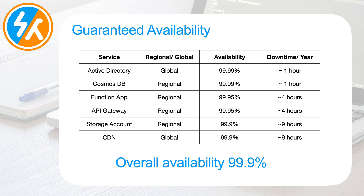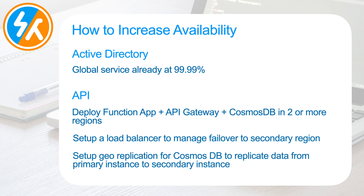For regional services, we can deploy them in multiple regions to make availability higher. For the backend, we will deploy the Azure Functions, API Gateway, and Cosmos DB into one more region. We will use a load balancer to manage the failover to the second region in case the first region goes down. We will set up geo-replication for Cosmos DB to sync the data in the secondary region, which will help us failover seamlessly.